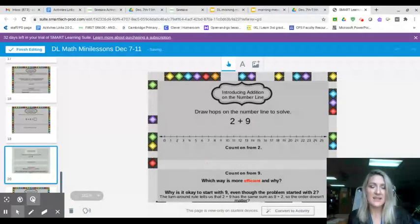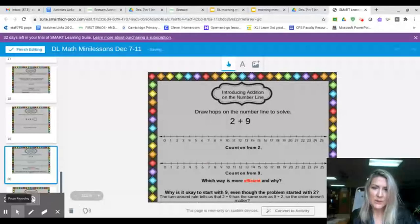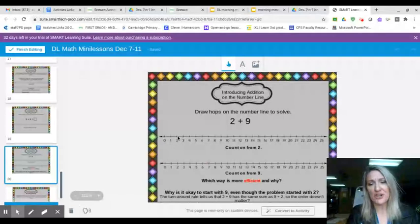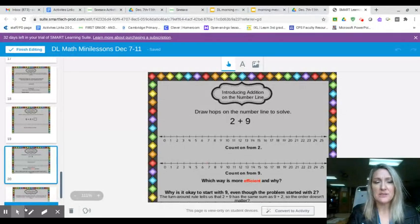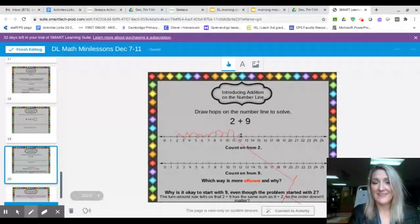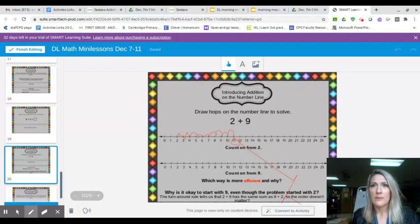Now let's think about this. If I have a problem that says two plus nine, would it make - would it be faster and more efficient if I said two and I started at two and I count up from two? Let's try that. So I'm gonna say two and I'm gonna count up nine more: one, two, three, four, five, six, seven, eight, nine. And where did I land? Whoops, I landed on eleven.